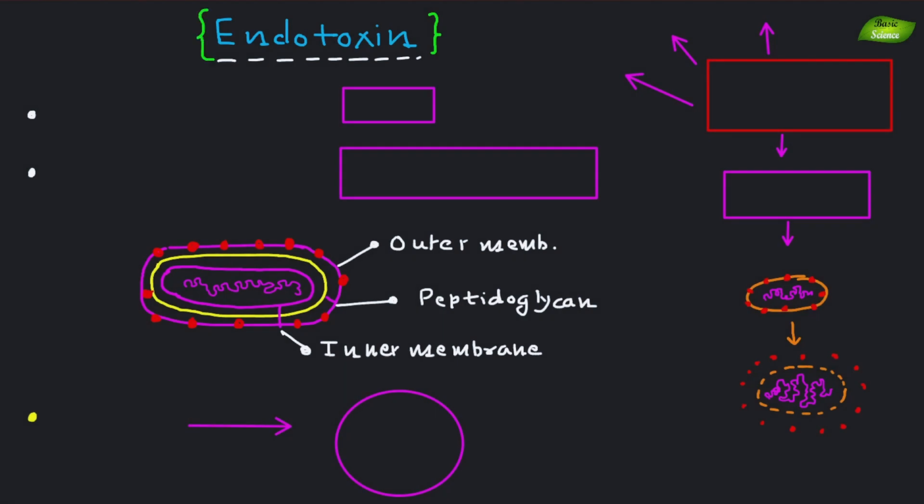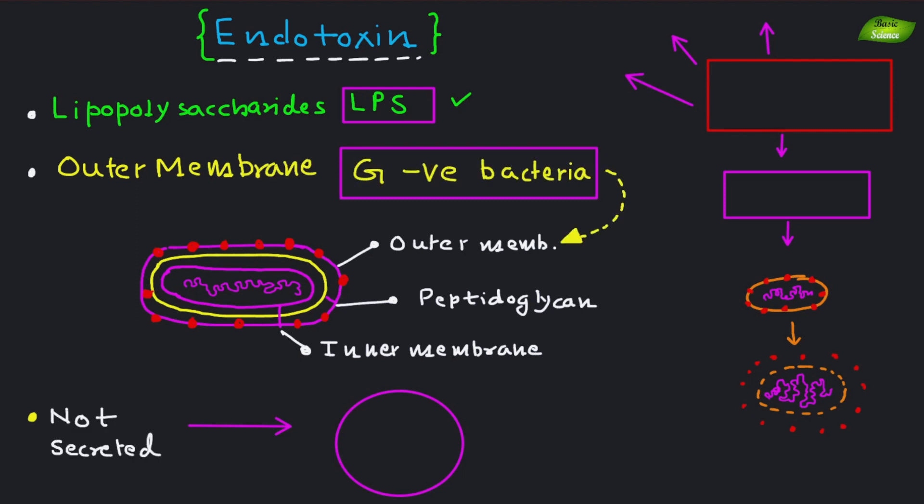Let's talk about the second category, endotoxins. Endotoxins are lipopolysaccharides found in the outer membrane of gram-negative bacteria. Unlike exotoxins, endotoxins are not directly secreted but are released when the bacterial cell disintegrates.